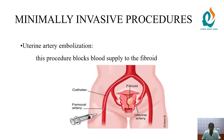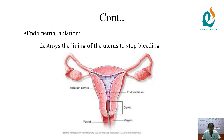In minimally invasive procedures, first we discuss uterine artery embolization — this procedure blocks the blood supply to the fibroid, which will reduce the growth of the tissue. The next one is endometrial ablation, which destroys the lining of the uterus to stop the bleeding.